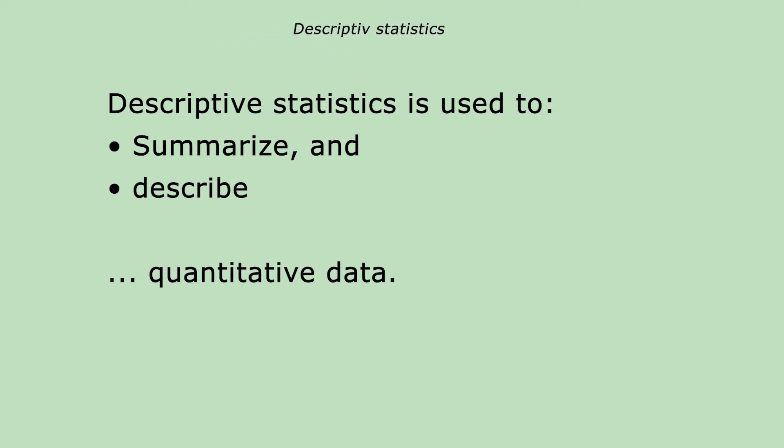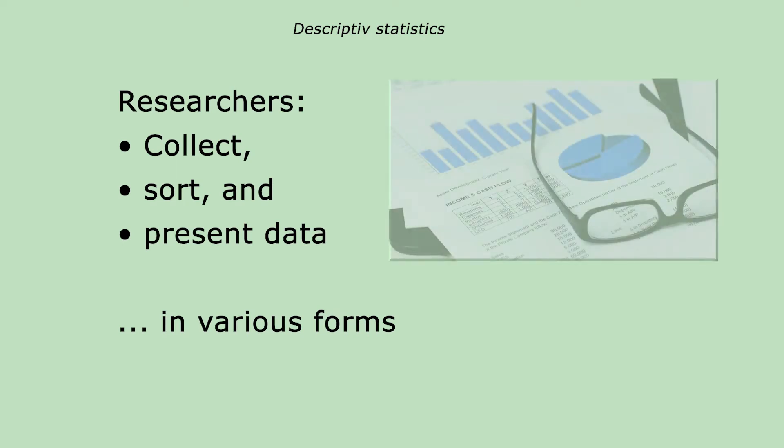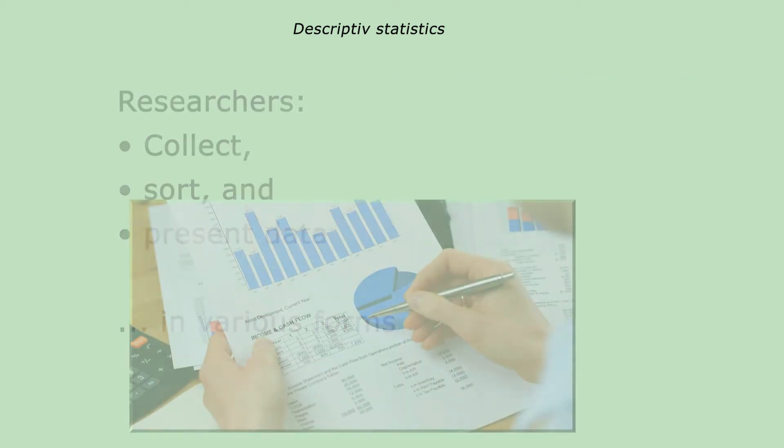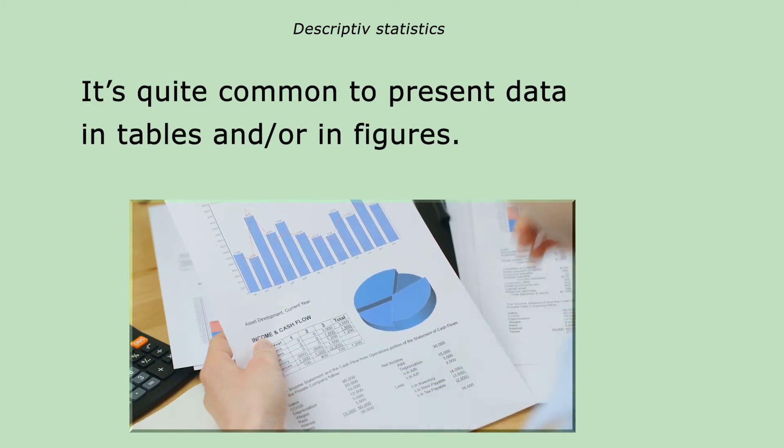Researchers use statistics to describe something. They collect data from people and sort these data in, perhaps, ascending order, or present the data in tables or figures. I'm pretty sure that you've seen examples of this before.